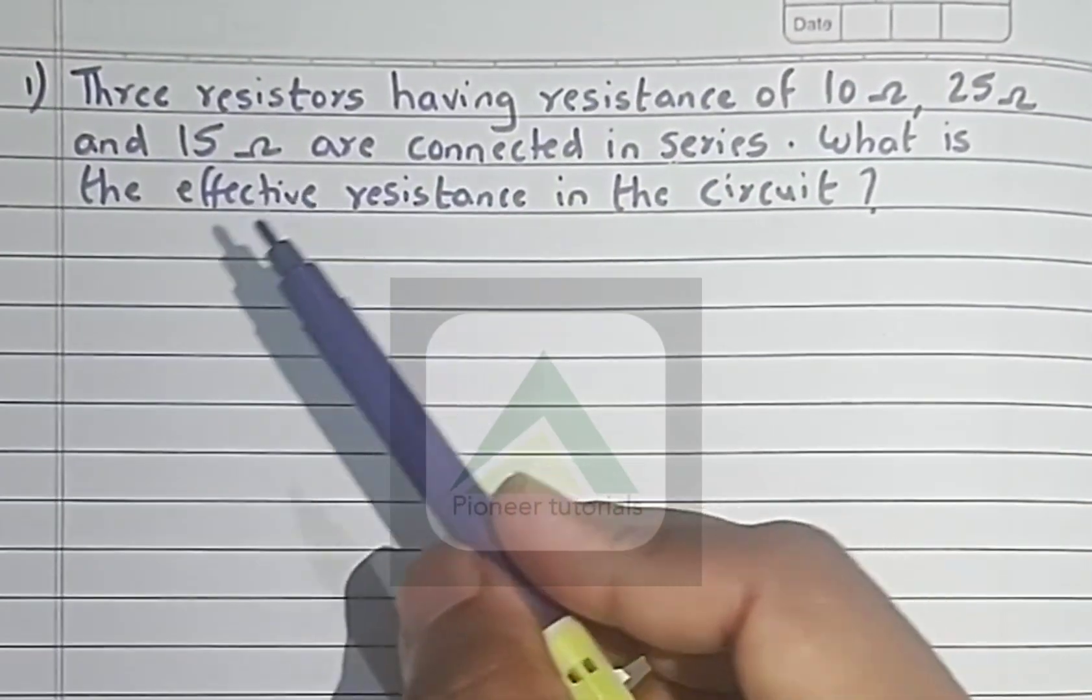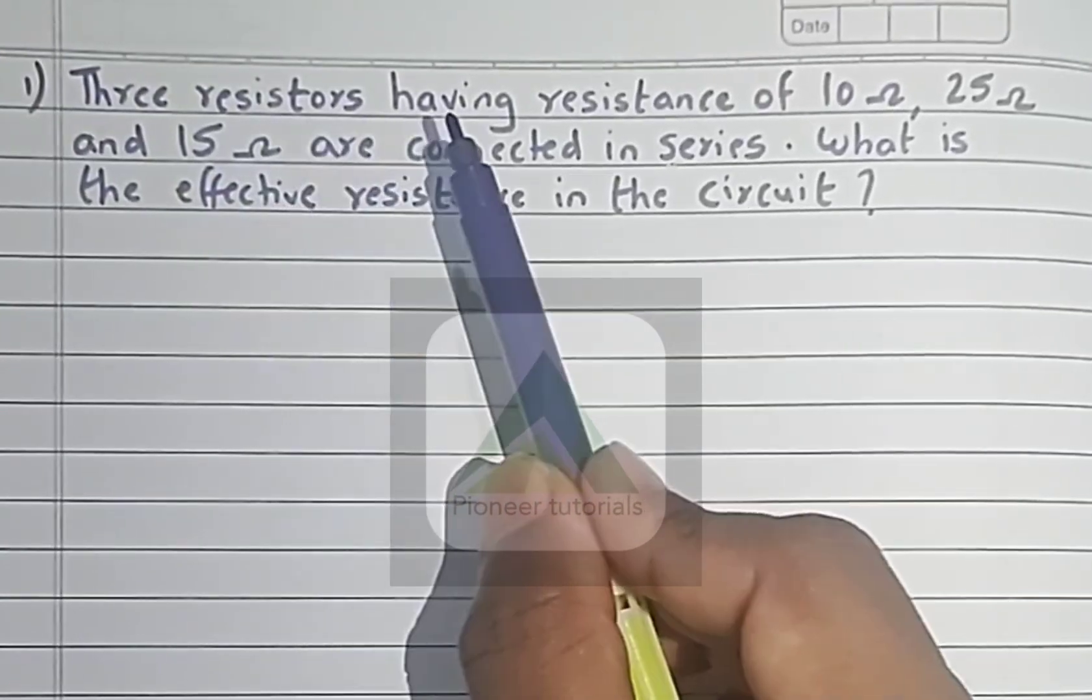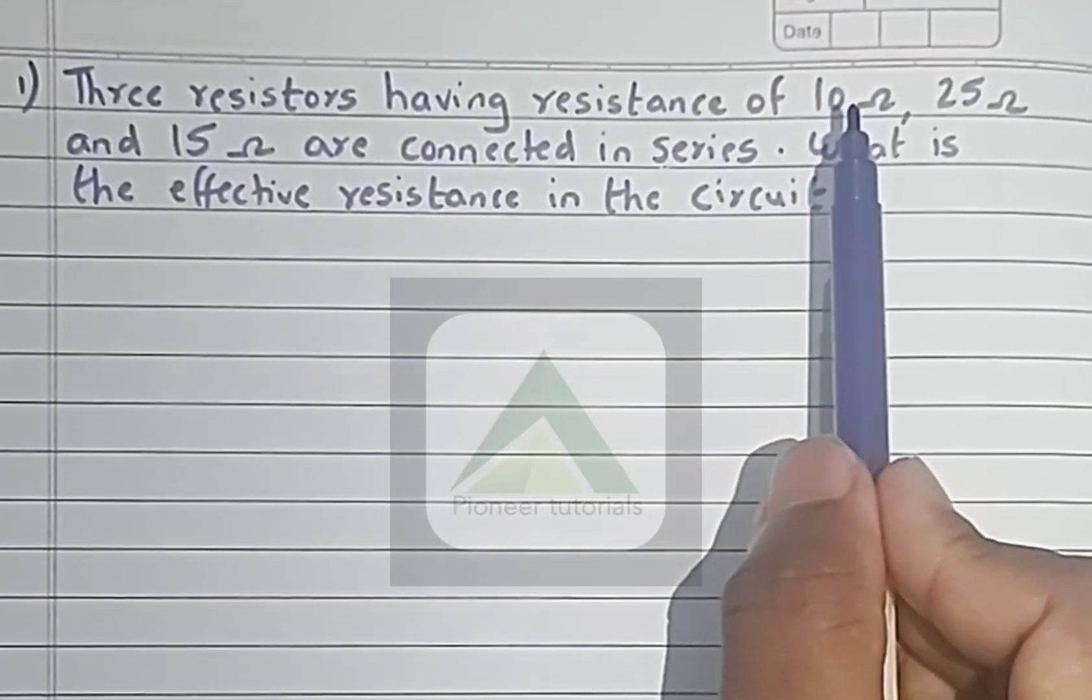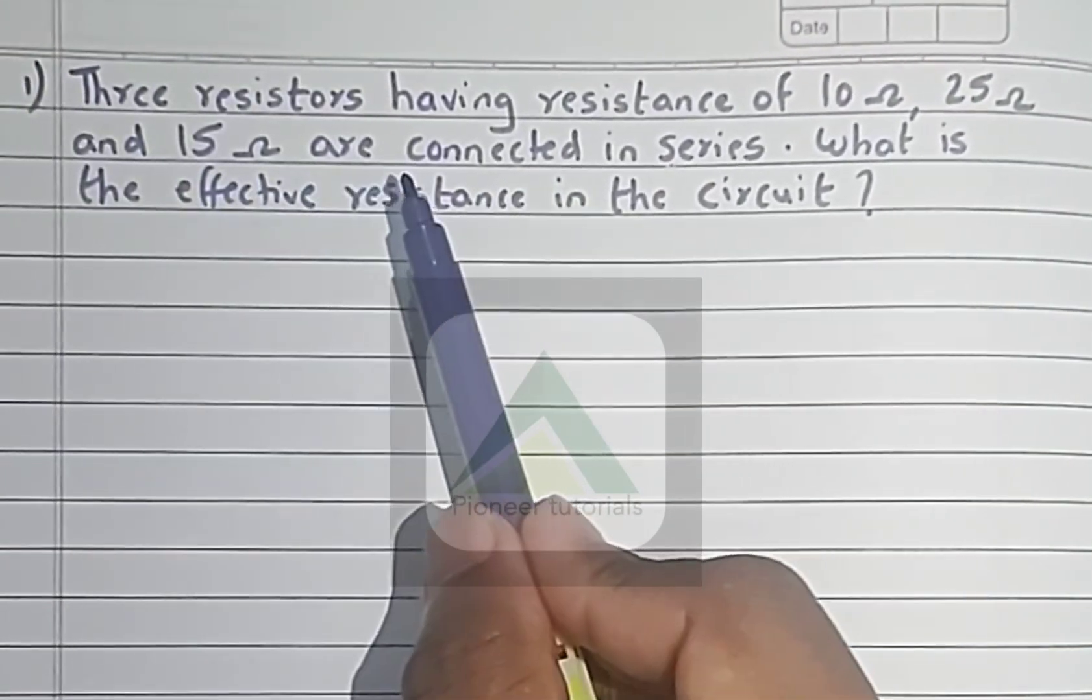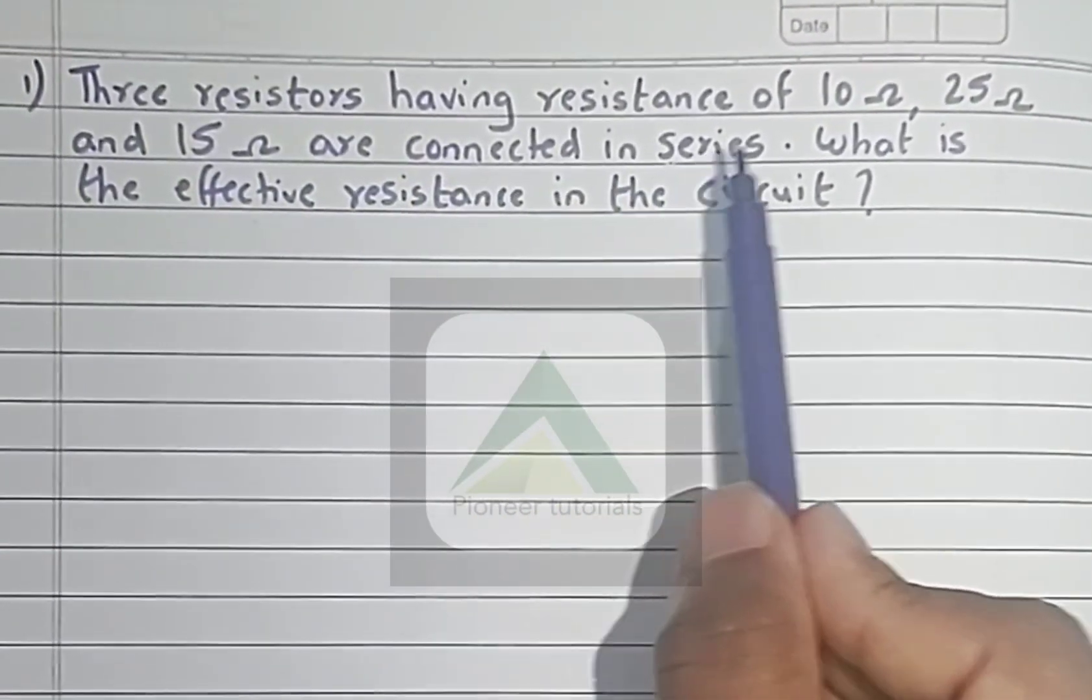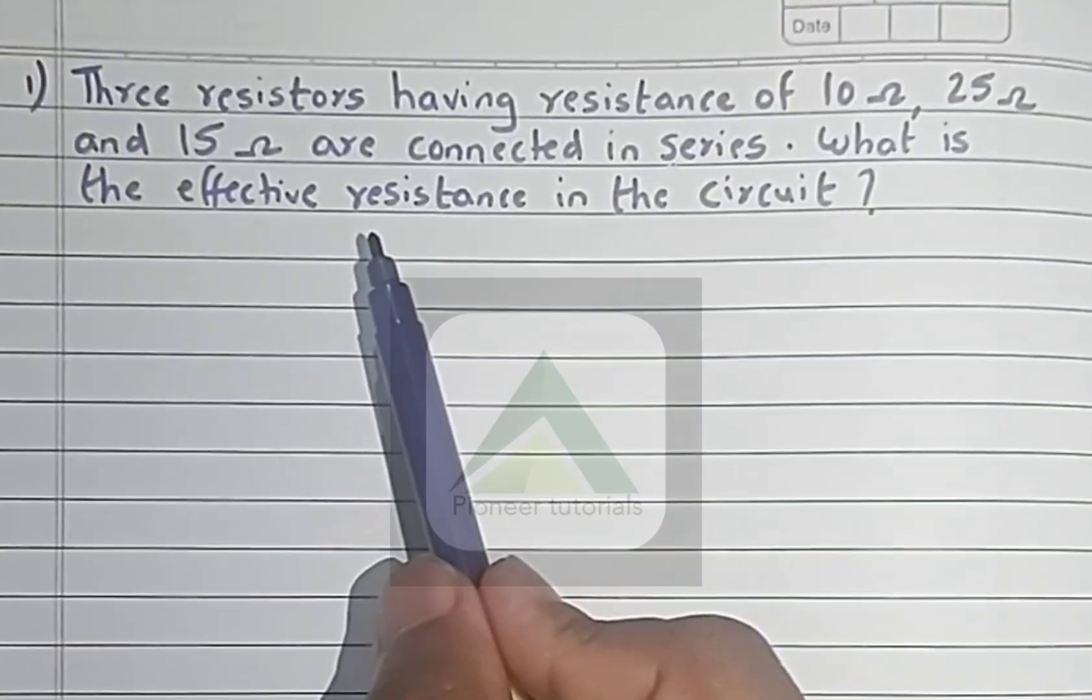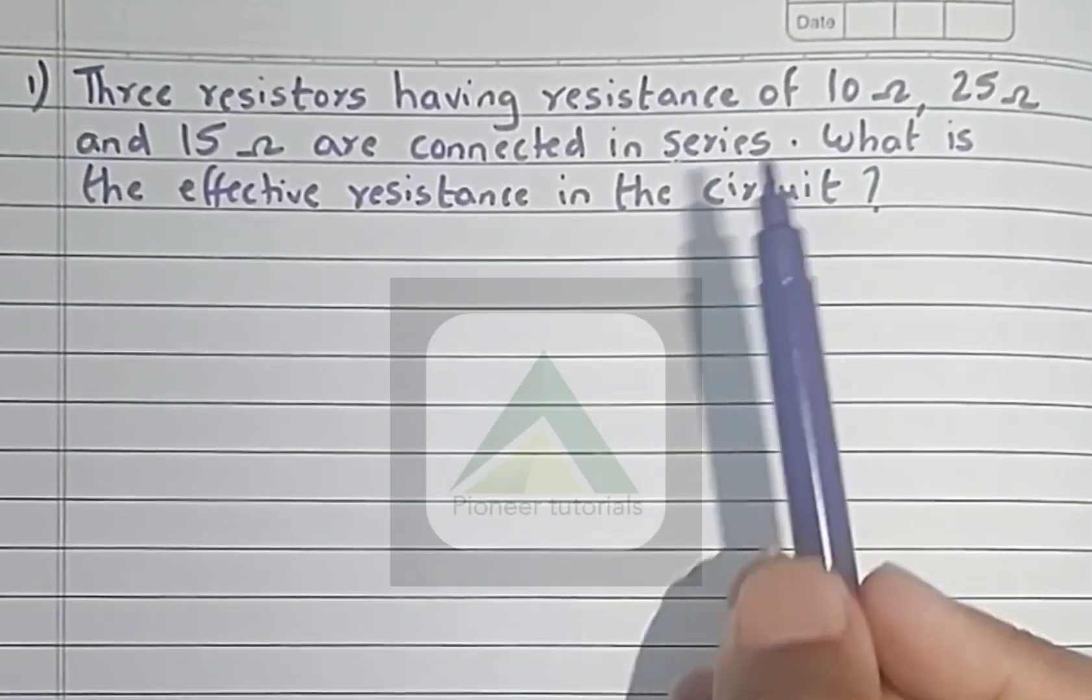Now let us see the question. Three resistors having resistance of 10 ohm, 25 ohm, and 15 ohm are connected in series. What is the effective resistance in the circuit?